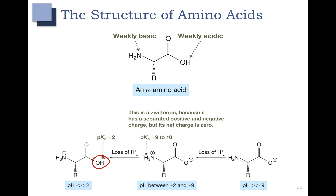At around pH 9, the ammonium, which has a pKa of about 9, starts to deprotonate as well. At a pH of 11, both groups are deprotonated — you have the carboxylate and the free amine. What you need to be able to do for an exam is to look at an amino acid and, given the pH of a solution, identify what the structure is.